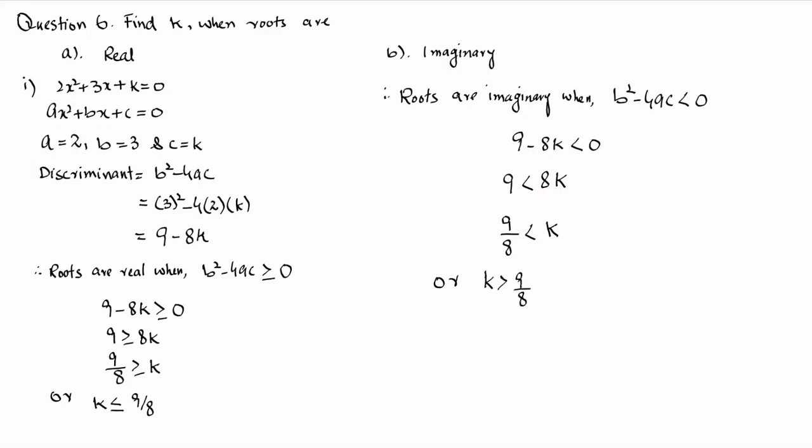So for the given quadratic equation, the roots will be real if the value of k is less than or equal to 9/8, and the roots will be imaginary if the value of k is greater than 9/8. Hopefully this is easy to understand. If you find the video helpful, please like the video, subscribe to the channel, and press the bell icon so that you get notified when a math problem is solved.